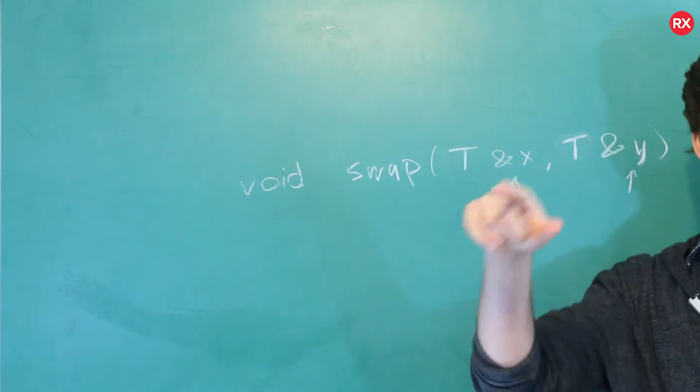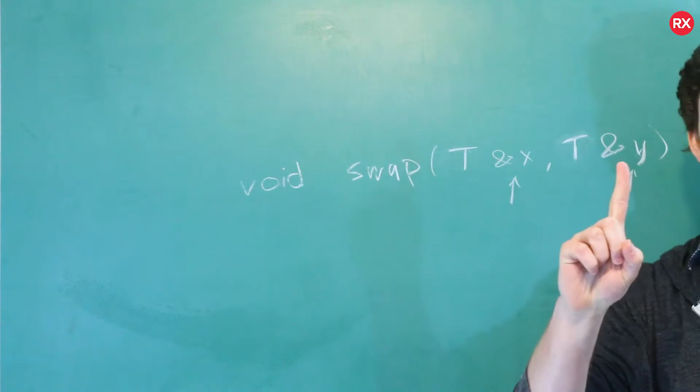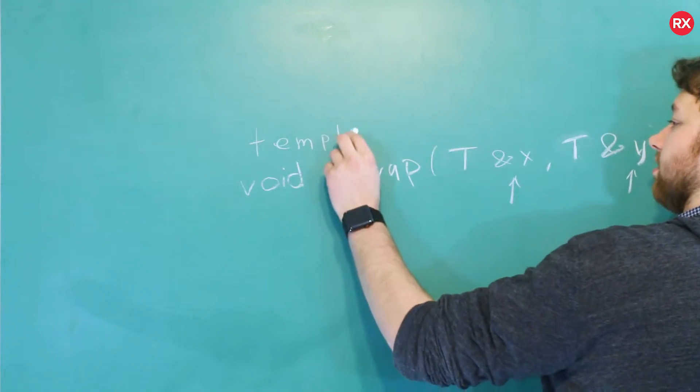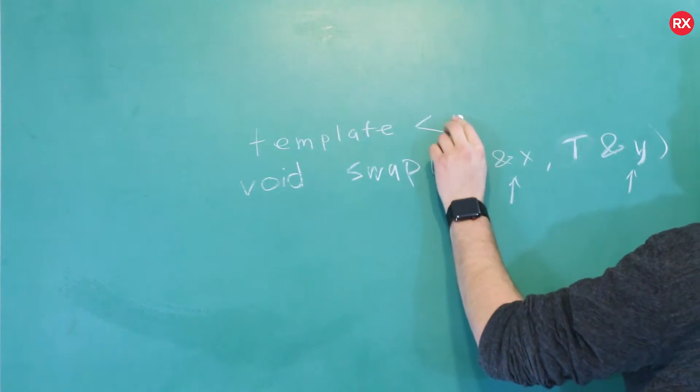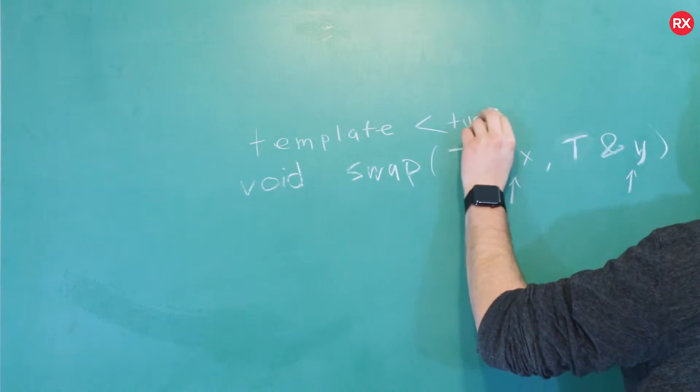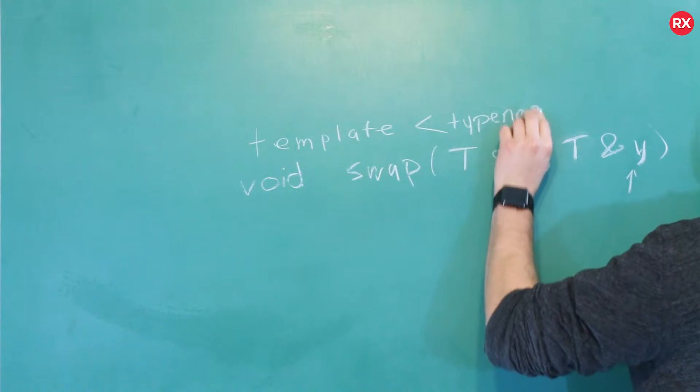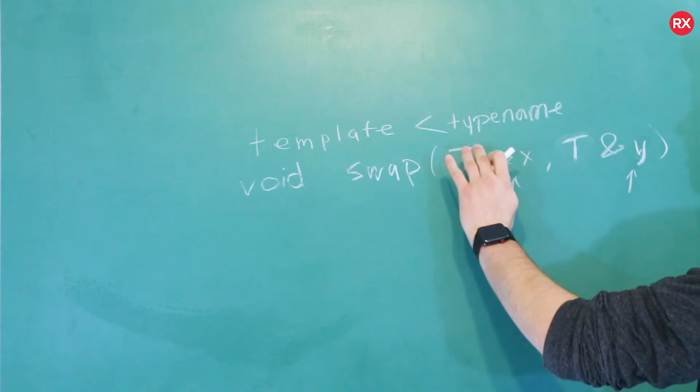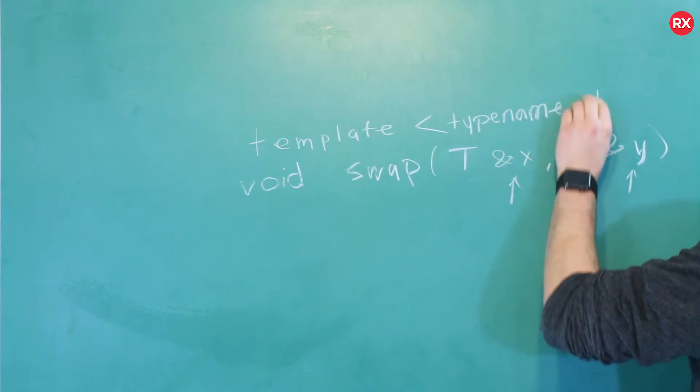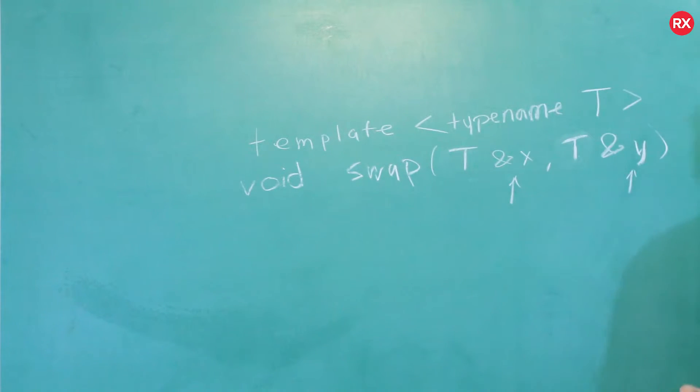So in order to say, yo, this is a templatized function, you have to do one more thing. Up here, you specify that this is a template. And then inside of angle brackets, you say, typename. You may also see some people put class here, but I'll go with typename, and then T. So this is basically specifying what that generic type is, in this case, it's T.